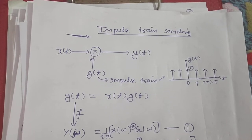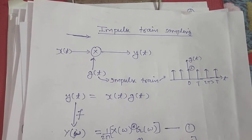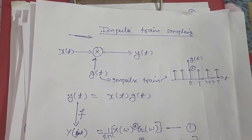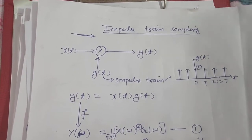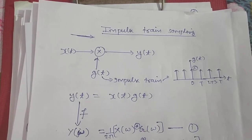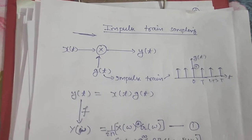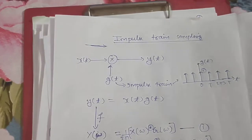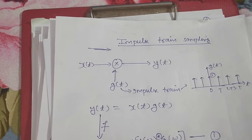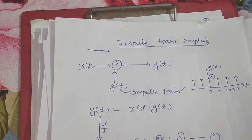Hello everyone. Today we will learn impulse train sampling. On the left I have drawn an impulse train, which is a sequence of impulses — one at t equal to 0, another at t equal to T and 2T, 3T — all have areas equal to 1. So when we multiply our signal x(t) with this impulse train g(t), then we get y(t).